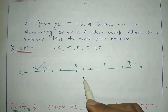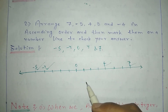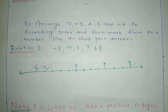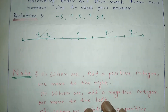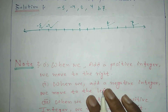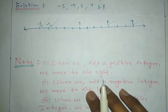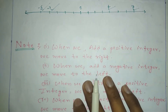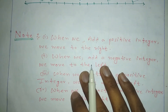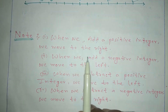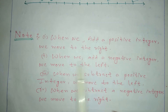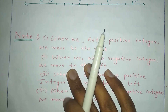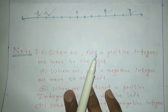This is how we can represent any number on the number line. Now let's look at some important points about integers. The first point: when we add a positive integer, we move to the right on the number line.